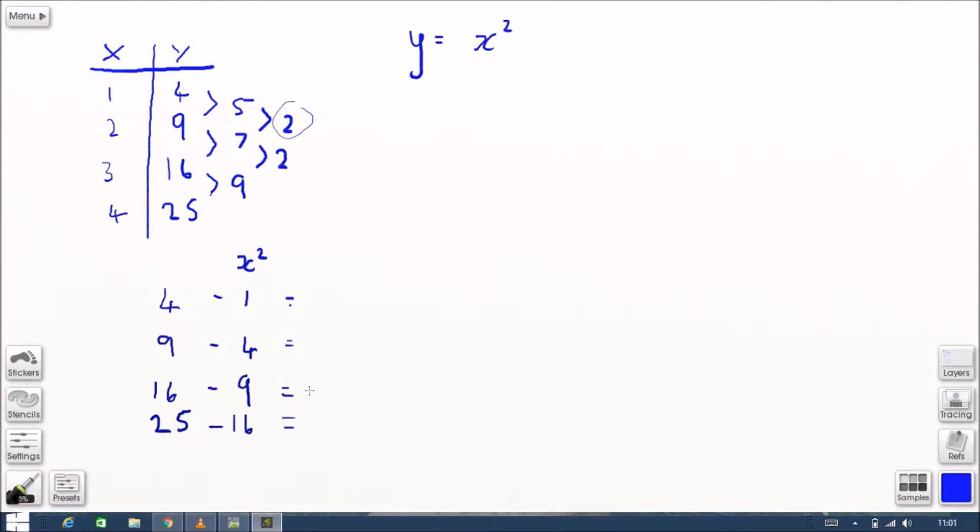So 4 minus 1 is 3, then 5, 7, and 9. So this is the extra part that we're going to have to account for in this part of the equation. This will be just the linear bit that we add on.